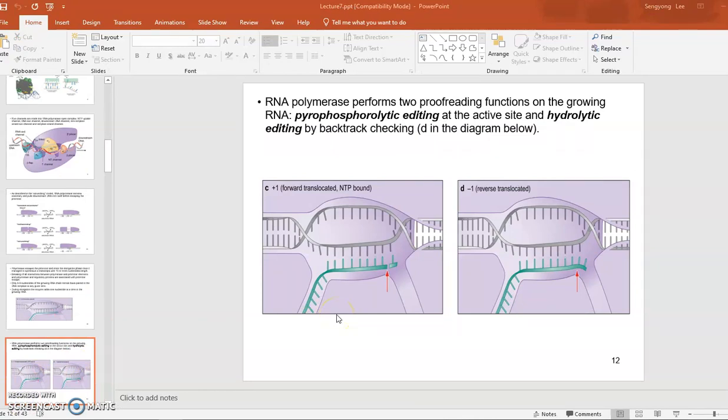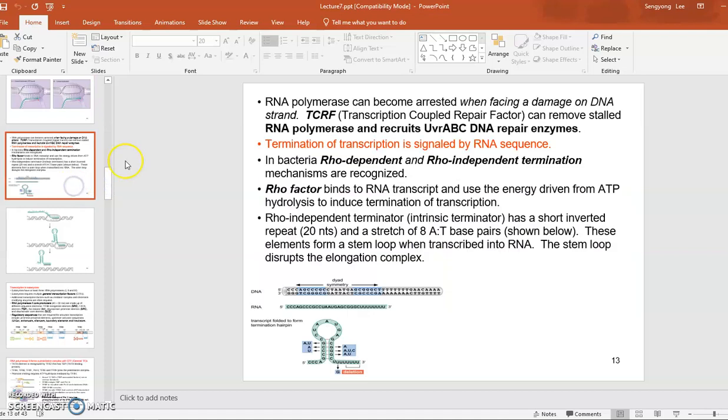RNA polymerase also does have a couple of proofreading mechanisms to try to correct its transcription. One mechanism is called pyrophospholytic editing, which means if it adds a wrong nucleotide accidentally, you can put that back by adding back the pyrophosphate to the nucleotide that was mistakenly added, so that nucleotide becomes triphosphate and falls off, and it redoes the polymerization after that. Another mechanism called hydrolytic editing, you can backtrack just like DNA polymerase and check if it's added correctly, and if it's not, it'll cut up the phosphodiester bond and then redo the polymerization.